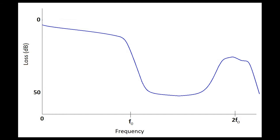If you go out in frequency a little farther to the right, you come into an area where the insertion loss starts to improve and actually starts letting more energy through, which you do not want — that's a bad thing. They call that a spurious harmonic resonant mode, and that should not be there, but it is a part of a real-life filter structure.